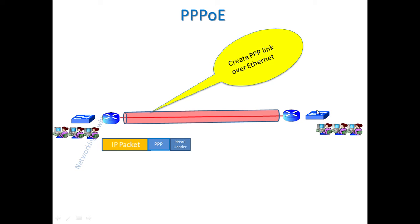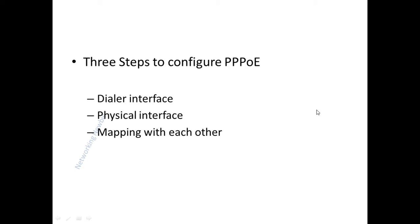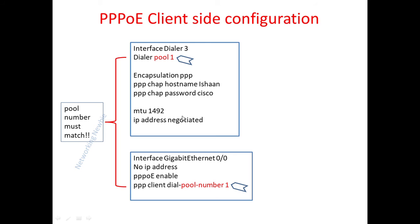This complete packet then travels through the Ethernet link from one network to the other. To configure PPPoE, three steps are required. The first step is to configure the dialer interface, which is the virtual interface. We also need to configure a physical interface, and then we need to provide a mechanism that maps the dialer interface to the physical interface.